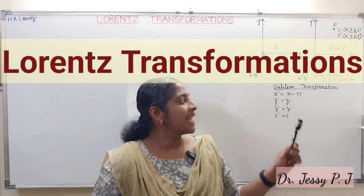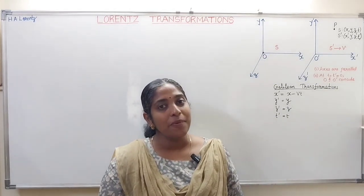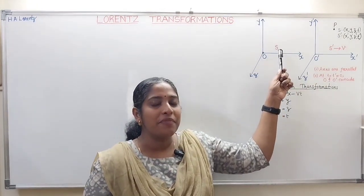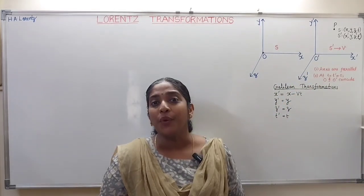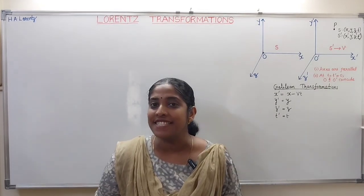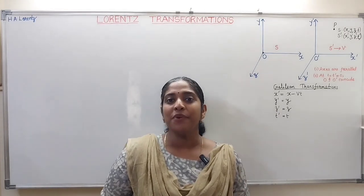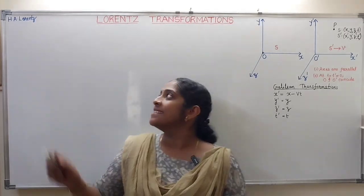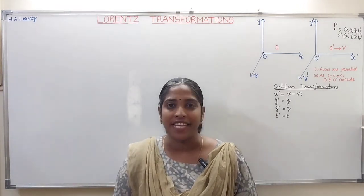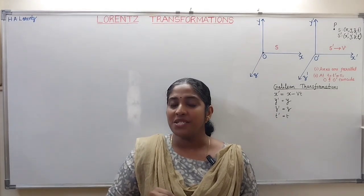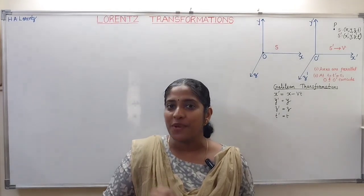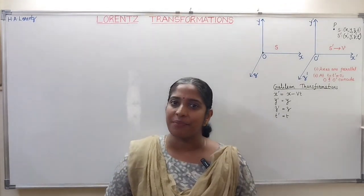In Newtonian mechanics, Galilean transformation equations give the relationship of space-time coordinates of a physical event in one inertial frame of reference to the other. But these equations are not valid for cases where the speed is approaching the speed of light c. For that case, a new set of equations was developed by the scientist H.A. Lorentz by incorporating the postulates of special theory of relativity. These new equations, valid for all speeds up to the speed of light c, are known as Lorentz transformation equations.